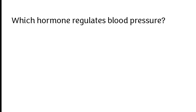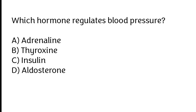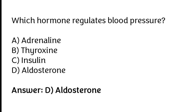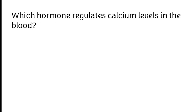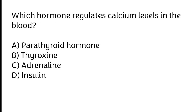Which hormone regulates blood pressure? Adrenaline, thyroxine, insulin, aldosterone. The correct answer is option D — aldosterone hormone regulates blood pressure.